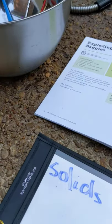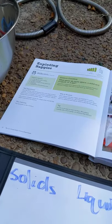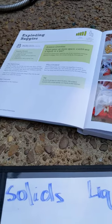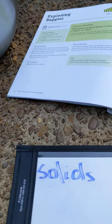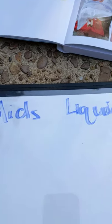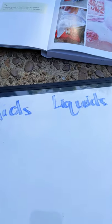Before we go into our experiment, we are just going to do a little bit of review for the three states of matter. The three states of matter that we learned in third grade are solid, liquid, and gas.